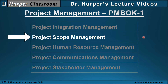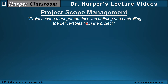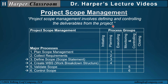Project scope management involves defining and controlling the deliverables from the project. In PMBOK, there are six processes. We will look at processes three through six, where three and four are part of the planning process group, and five and six are part of monitoring and controlling. Two important process outputs are the scope management plan and the work breakdown structure.